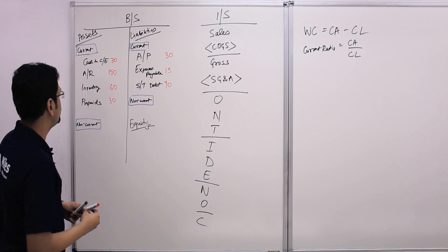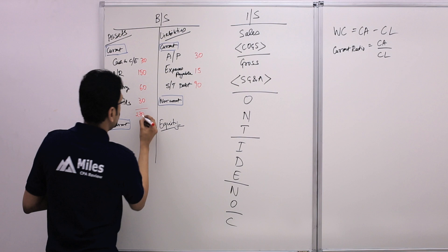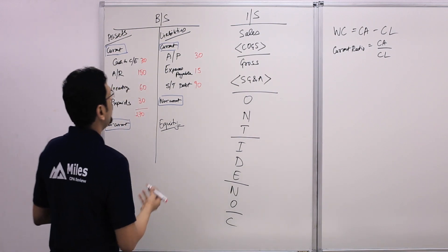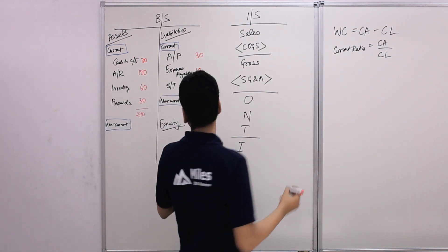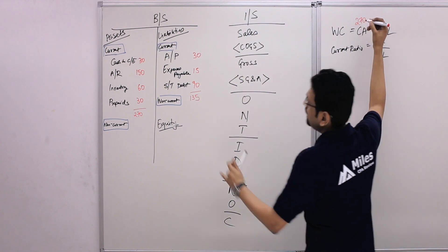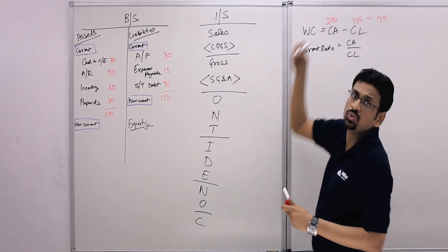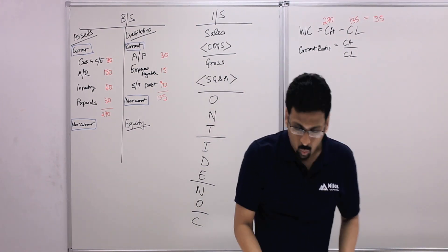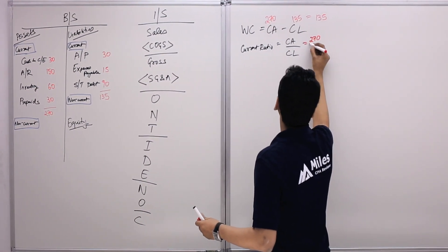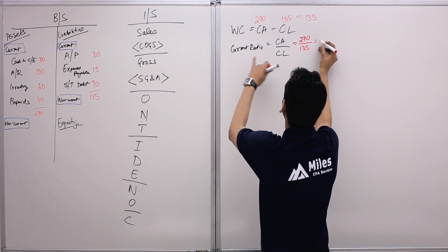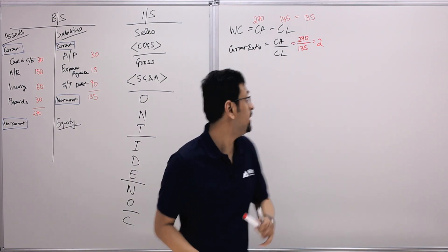Total current assets: 30 plus 150 plus 60 plus 30 equals $270,000. Current liabilities: 90 plus 30 plus 15 equals $135,000. Working capital is 270 minus 135 equals $135,000. Current ratio is 270 divided by 135, which is 2 — current assets are twice the current liabilities.